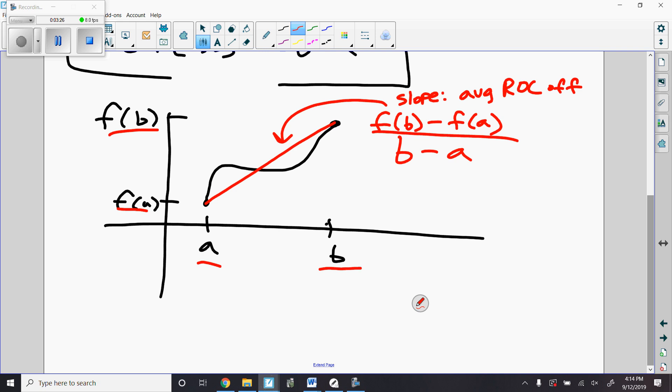So the average rate of change, if we have a graph, we can just do the slope that connects the two endpoints. We can do this from a table or we can do it from a function. Let me give you a quick table and function.